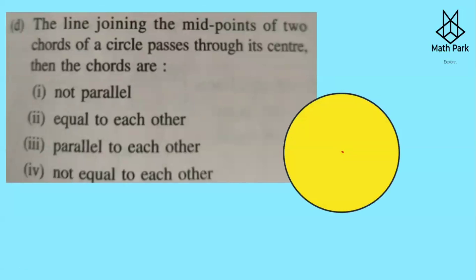Question 4: The line joining the midpoints of two chords of a circle passes through the center — what is the relation between the chords? Taking two chords AB and CD, the line joining their midpoints M and N passes through center O. The perpendicular from the center bisects each chord, giving 90-degree angles. By alternate angles, the chords are parallel to each other.